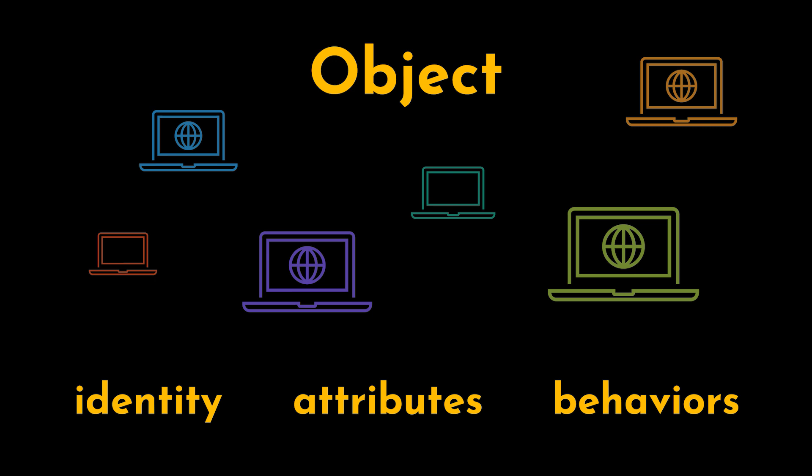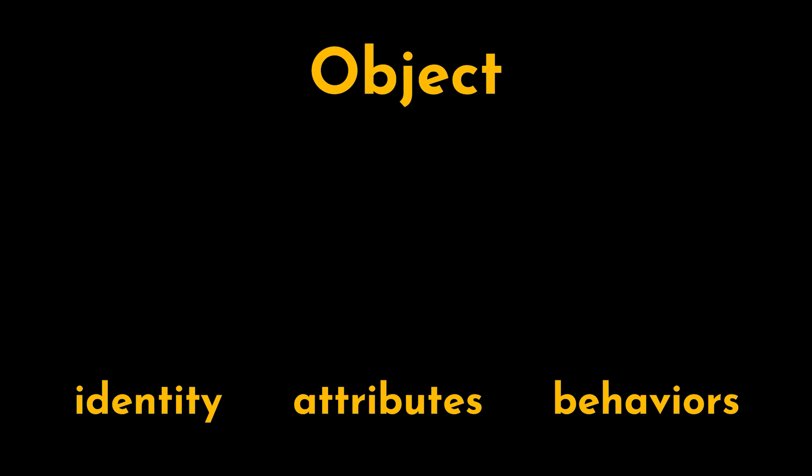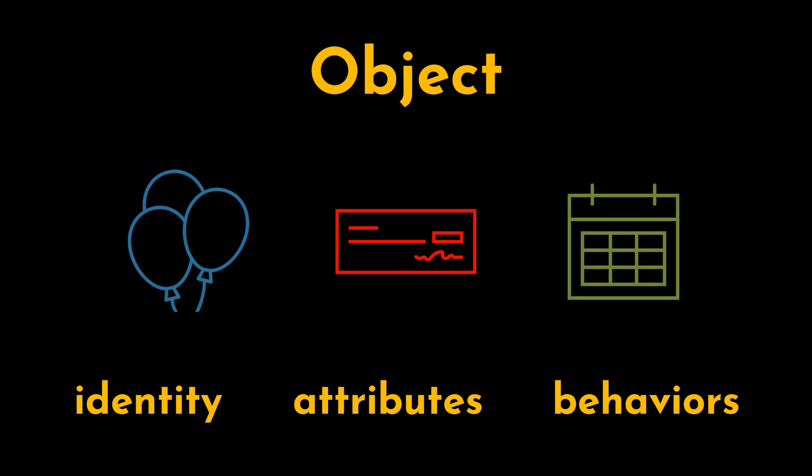Now, while in the real world we tend to use only concrete things to be referred to as objects, in OOP this can go further to include abstractions such as bank accounts, dates, or events. All of these are well-defined ideas having their own identities separate from each other, their own attributes—information that describes their current state—and their own behaviors, things they can do.